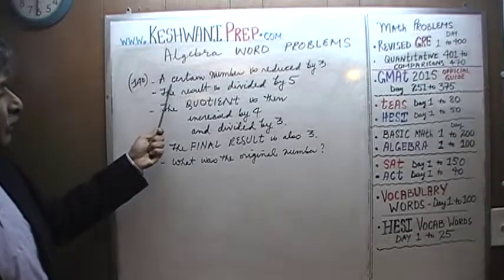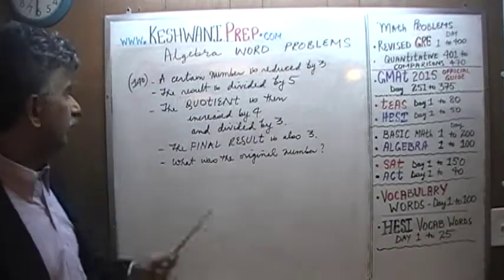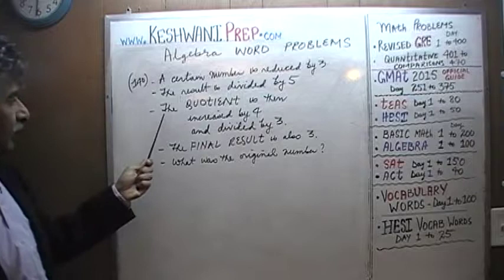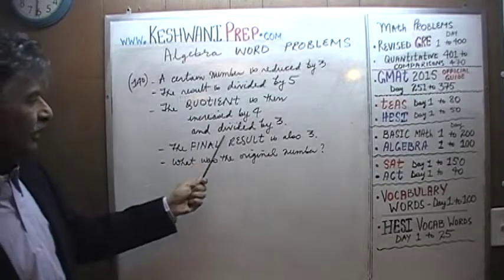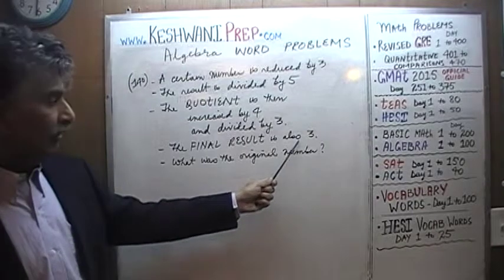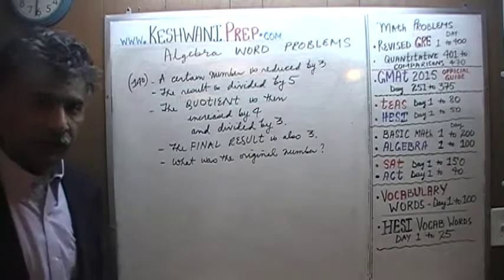It says a certain number is reduced by 3. The result is then divided by 5. The quotient is then increased by 4 and divided by 3. The final result turns out is also 3. The question simply is, if that were the case, what was the original number?